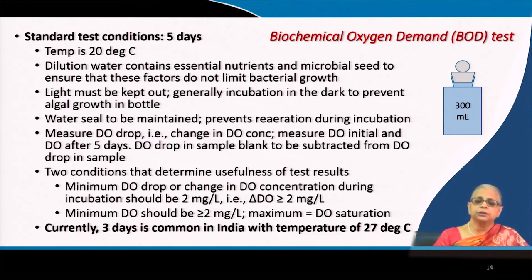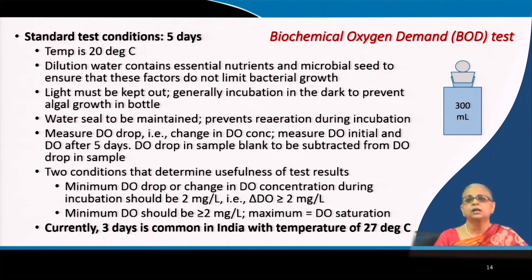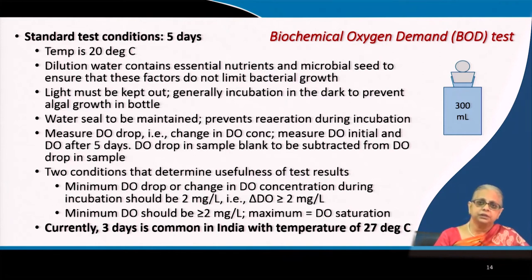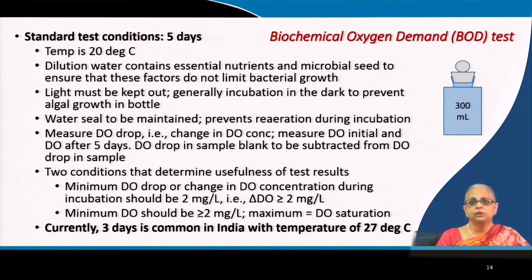Wastewater — municipal sewage or industrial — has varying degrees of biodegradable material. For municipal wastewater a COD ratio of 2–4 is typical. Industrial wastewaters range from completely non-biodegradable to completely degradable: food processing wastewater has fully biodegradable material, paper and pulp may be mixed, and pesticide manufacturing wastewater may contain only toxic chemicals with no biodegradable material.